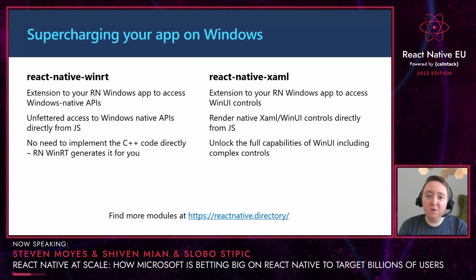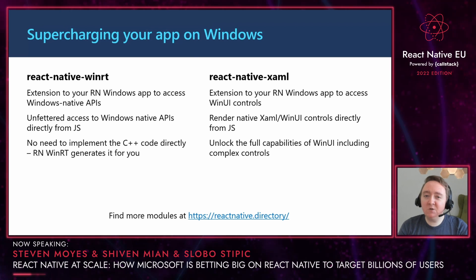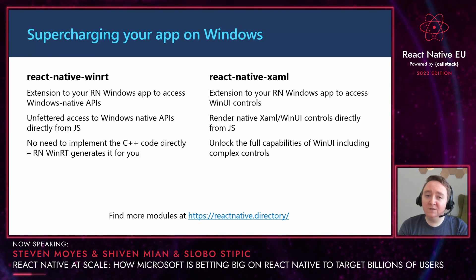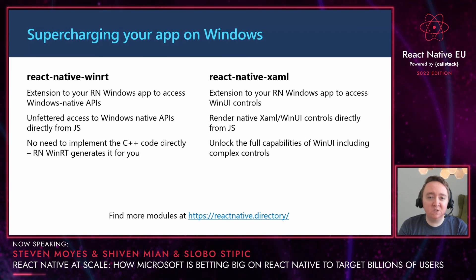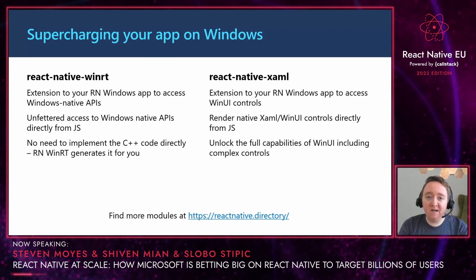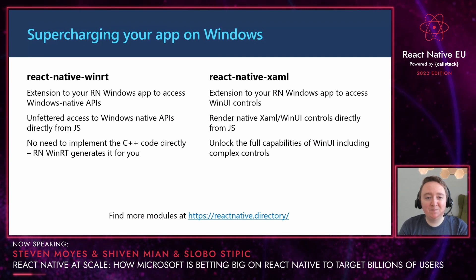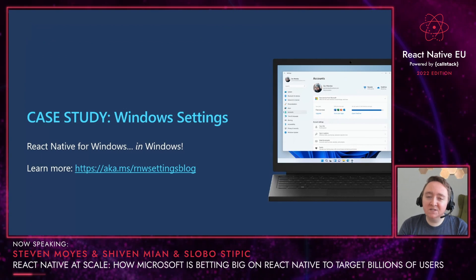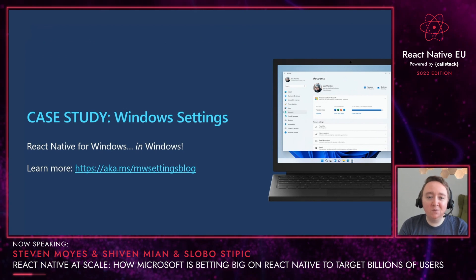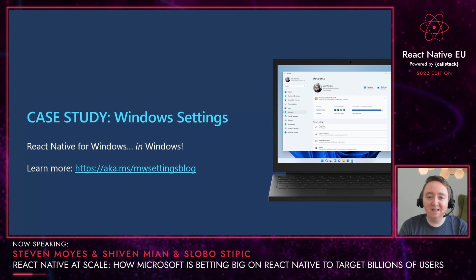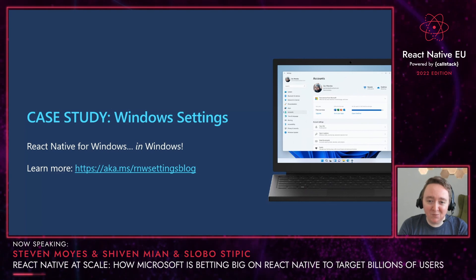I wanted to quickly highlight two of the modules that the settings team used to create their experience — and so can you. These two modules let you call Windows-specific APIs to unlock the power of the native Windows SDK and the presentation layer, so that you can supercharge your app on Windows. You can find more modules that work with Windows and macOS at reactnative.directory. If you want to learn more details about how and why the Windows Settings app is using React Native, check out the blog at aka.ms/rnwsettingsblog.